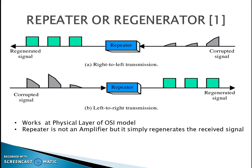Now let's look at the first device: the repeater, or regenerator. It works at the physical layer of the OSI model. We should understand that a repeater is not an amplifier — it is a device which simply regenerates the received signal. In other words, it removes the noise from the corrupted signal to give you a clean signal. As you can see from the diagram, if a signal is corrupted and given to the repeater, a noise-free signal is produced at the output. In an amplifier the noise is also amplified, whereas in a repeater the noise is removed and a clean signal is produced.